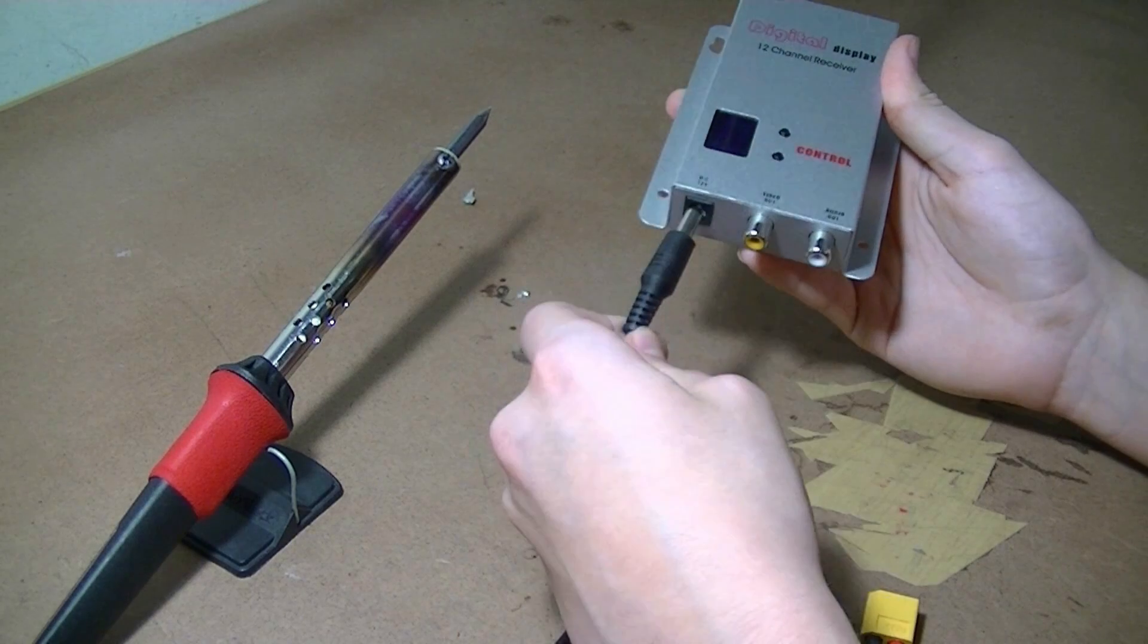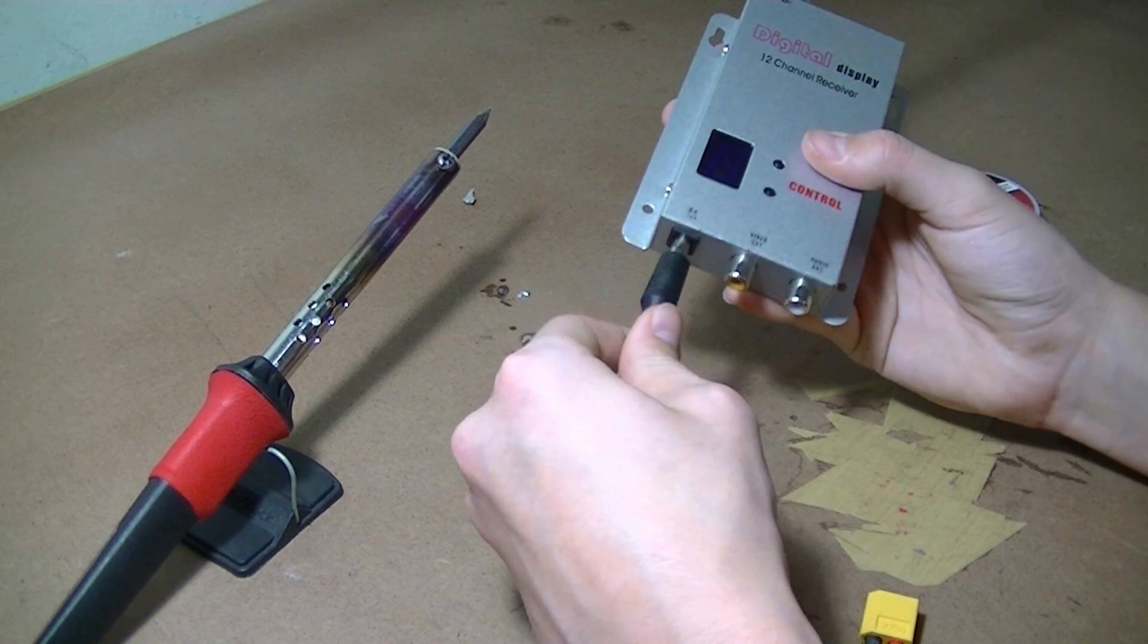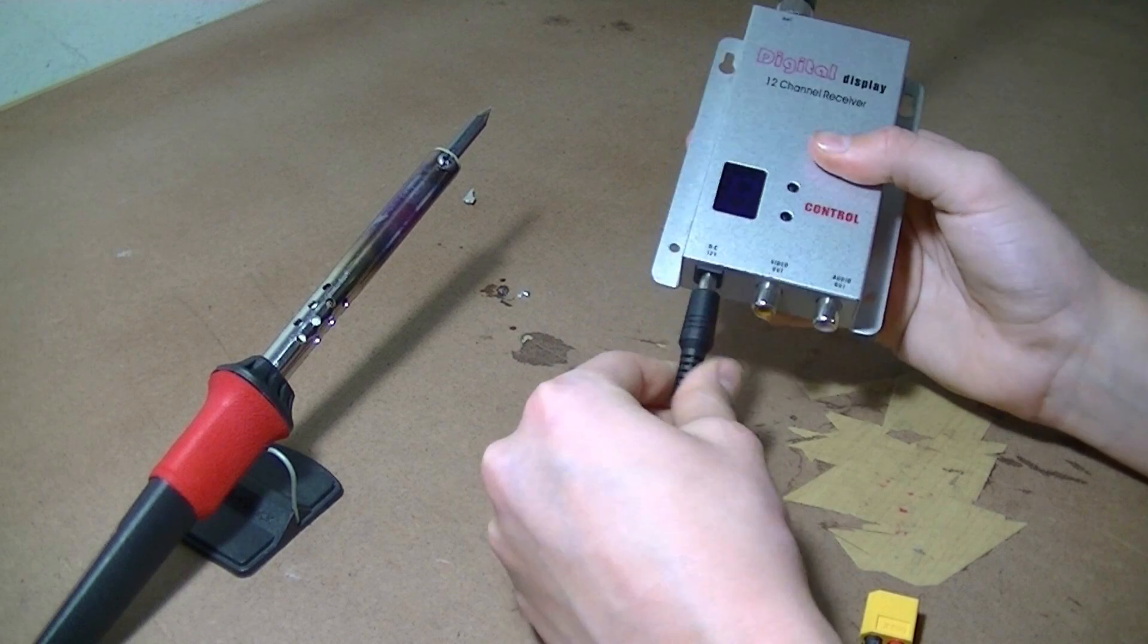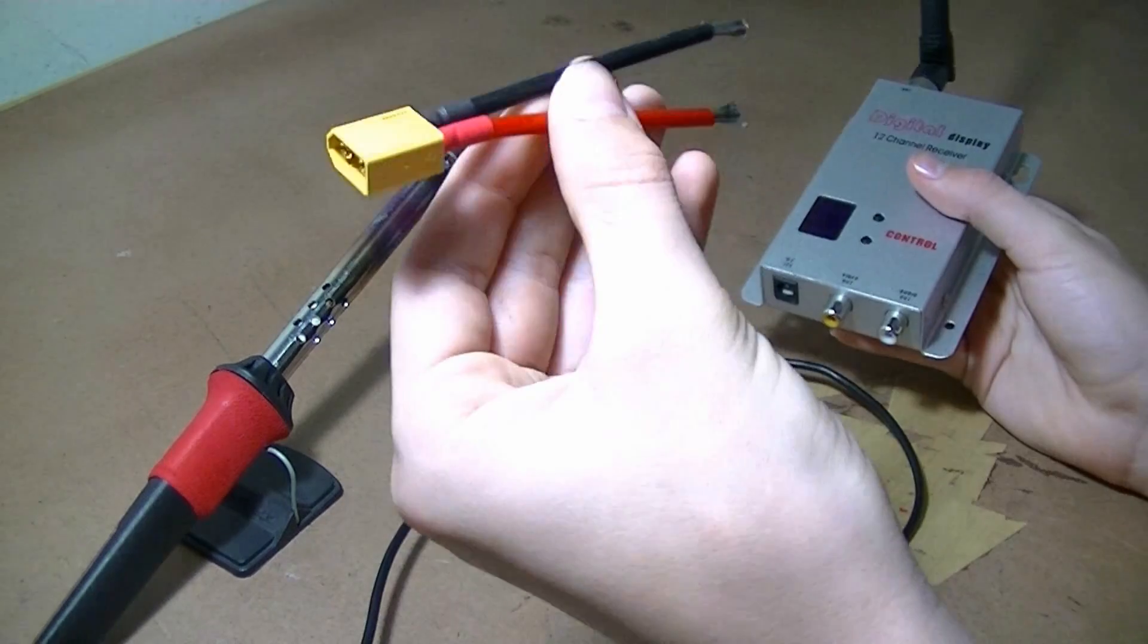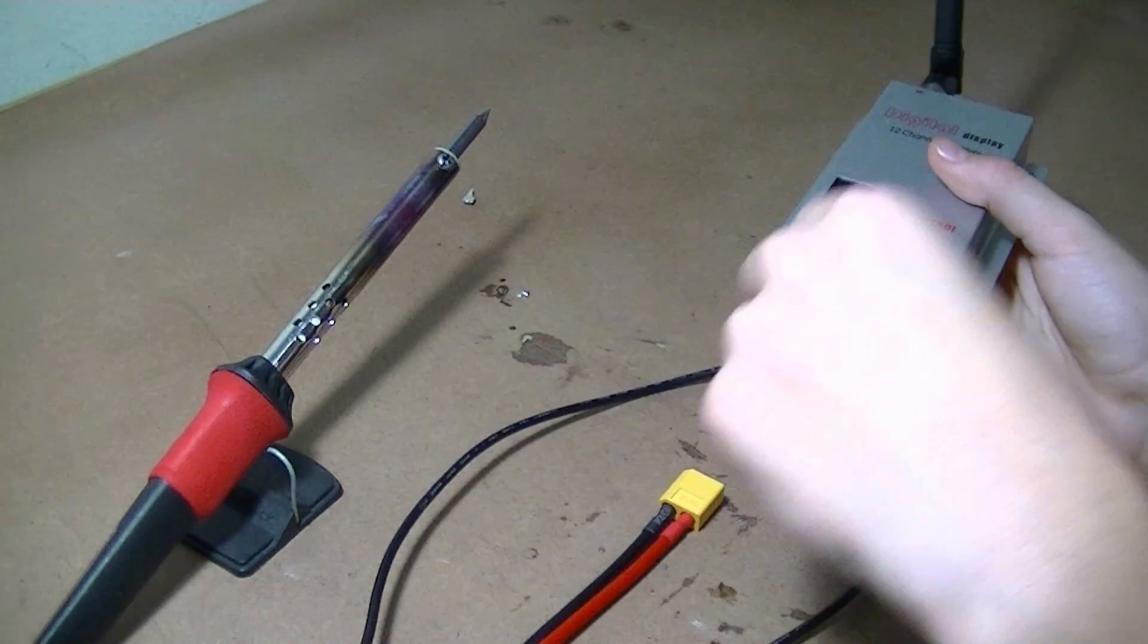First you need a plug that plugs into your receiver. I got this from an old laptop charger, but you can buy yours. You need a battery plug, a soldering iron, and some solder.